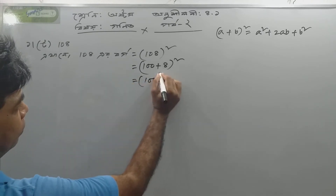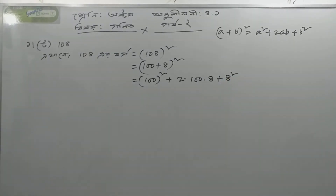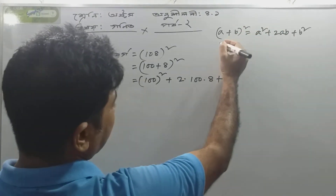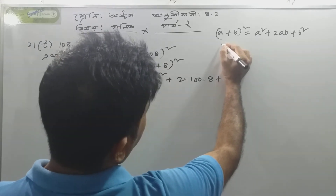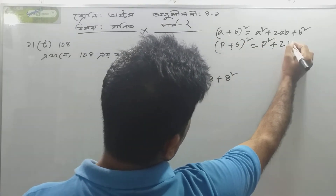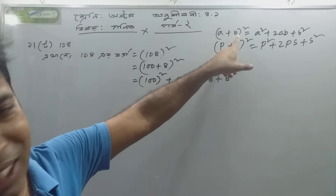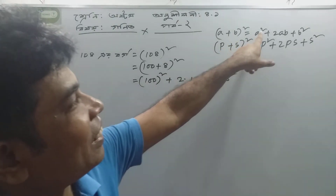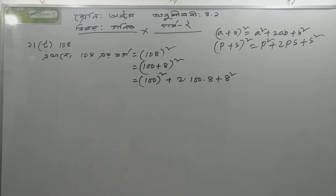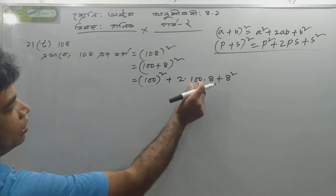So, this is a² plus 2a into b plus b². So, a plus b whole square. Let's see: a plus b whole square equals a² plus 2ab plus b². So, we have x plus 8, which gives x² plus 2 into x into r plus r².